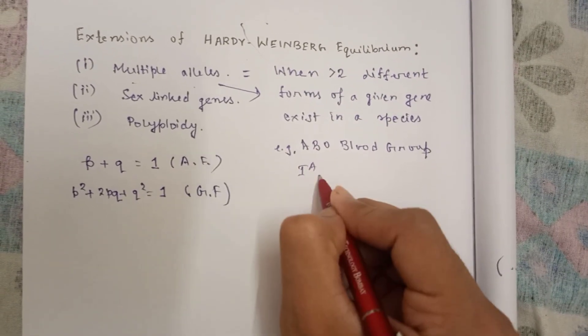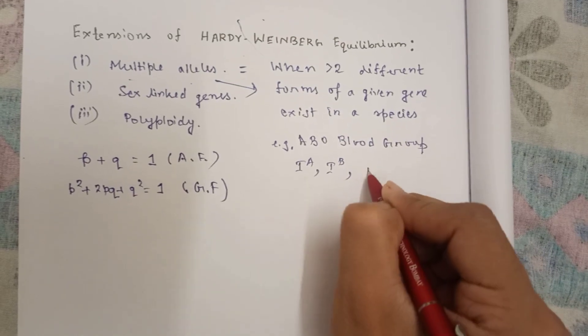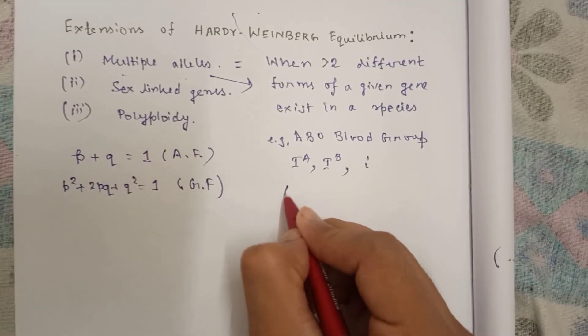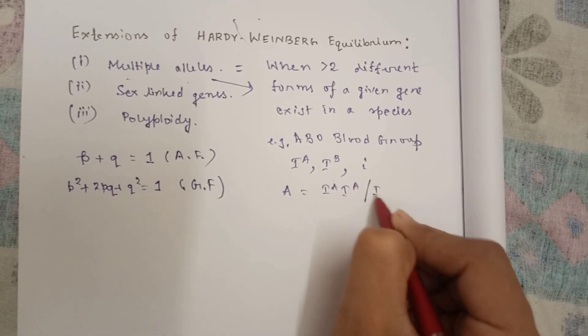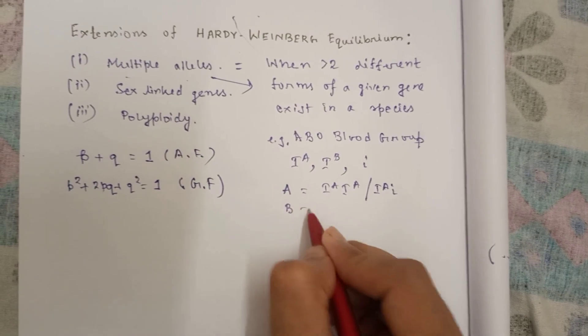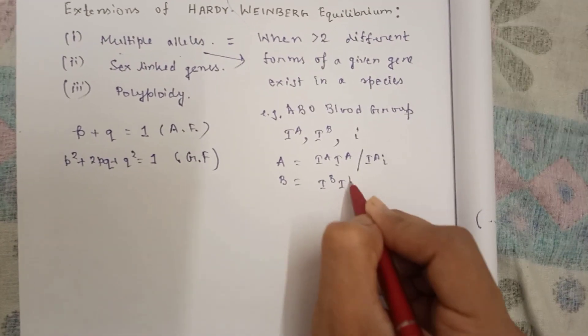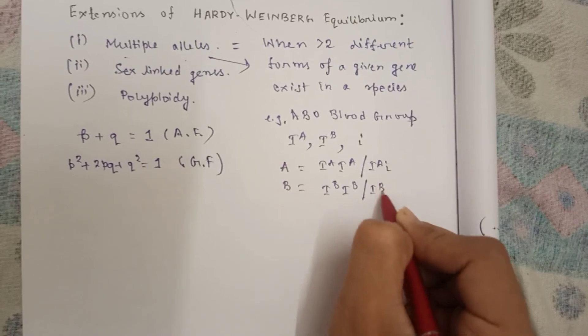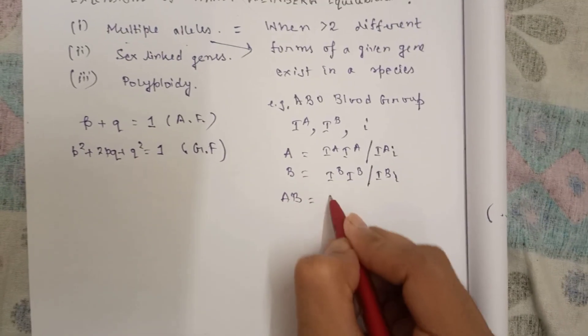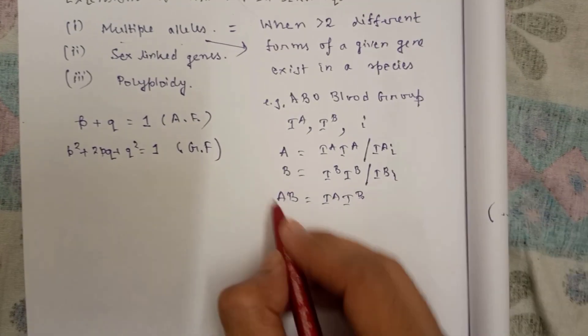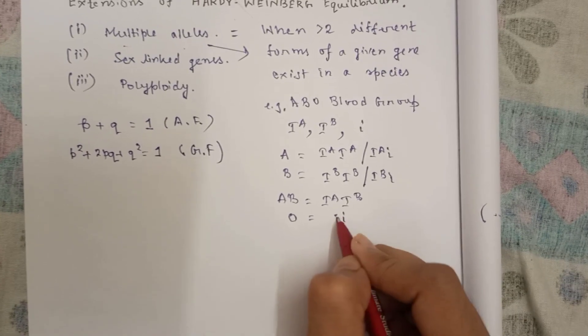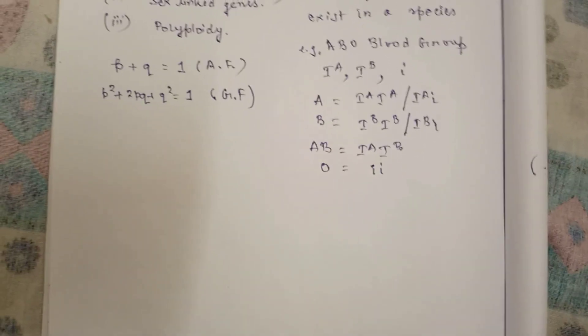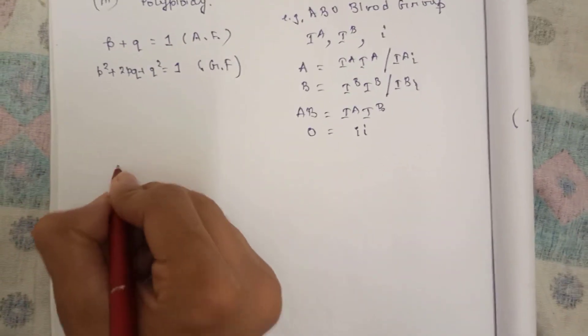There are three alleles: I^A, I^B, and small i. For group A, that is either I^A I^A or I^A i. For B, I^B I^B or I^B i. For AB, there can be only I^A I^B. And for O, that is i i or you can write as double i or small i.